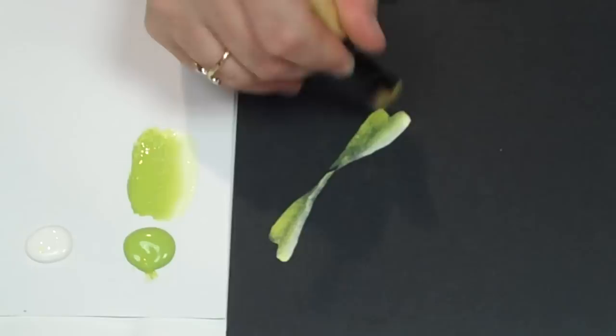Then come back to the center, press down on the chisel edge, pull back, and then come back up onto the point of the brush.